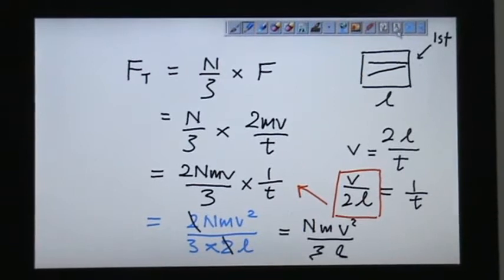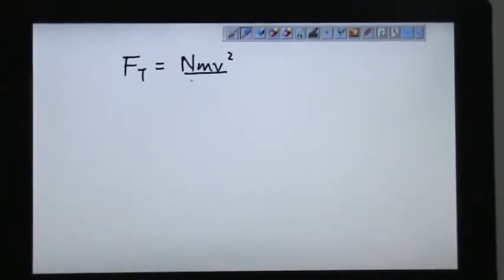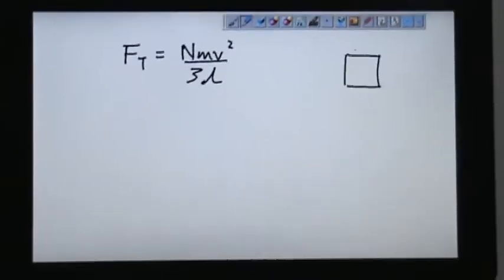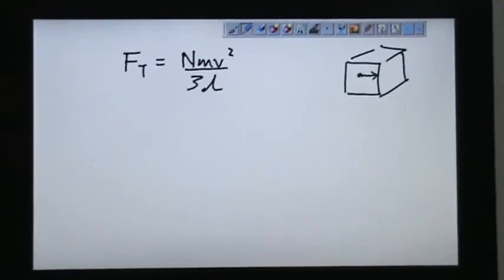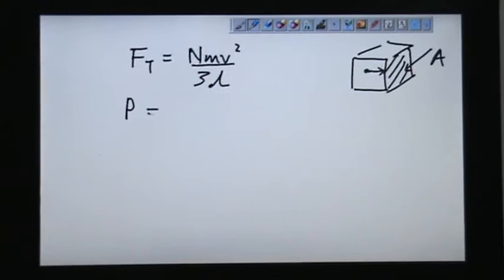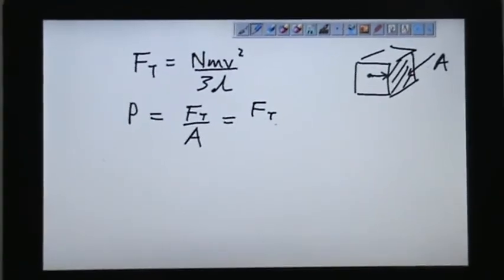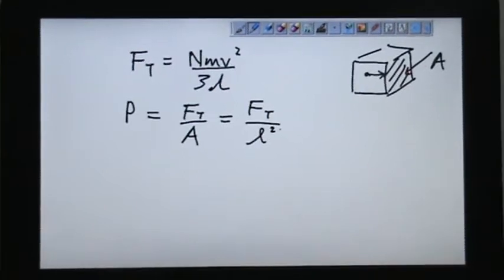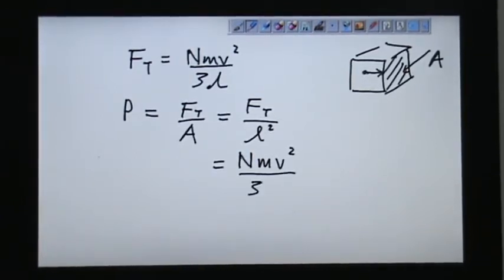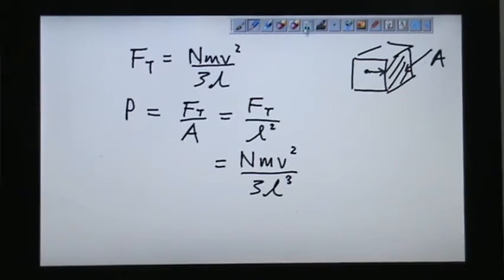So let's remember this: Nmv squared over 3L. So F total equals to Nmv squared over 3L. But coming back to the same container, when this particle hit the wall, it hits the surface area A. So if we want to consider pressure, pressure hitting on the wall, it's actually FT over A. So FT I can fill in later, A is L squared. So I put in my Nmv squared over 3 become L cubed, because 3L over L squared is 3L cubed. Do you realize one interesting thing?